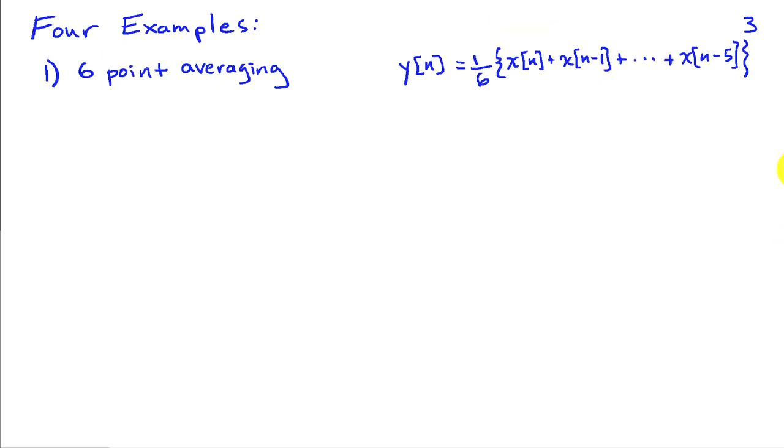Next we're going to look at four different examples of difference equations. In this first example, we've got a six-point average, so the output is simply given by an average of the six most recent inputs. If you think about what this system is going to do, by averaging we're smoothing out fluctuations. This is going to attempt to amplify the lower frequency components in x and attenuate high frequency components, because things that change over this interval are going to get averaged out.